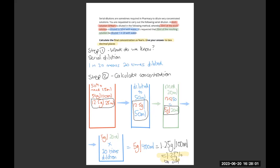Now, moving forward to the dilution. If it's 5 grams in 20 mils, and it's diluted 1 in 20 with water, then we need to multiply by 20. So, 5 grams in 20 mils becomes 5 grams in 400 mils. We need to calculate this as a percentage. Percentage is grams per 100 mils. Therefore, it's 1.25%. I hope that answers your question and helps your understanding.